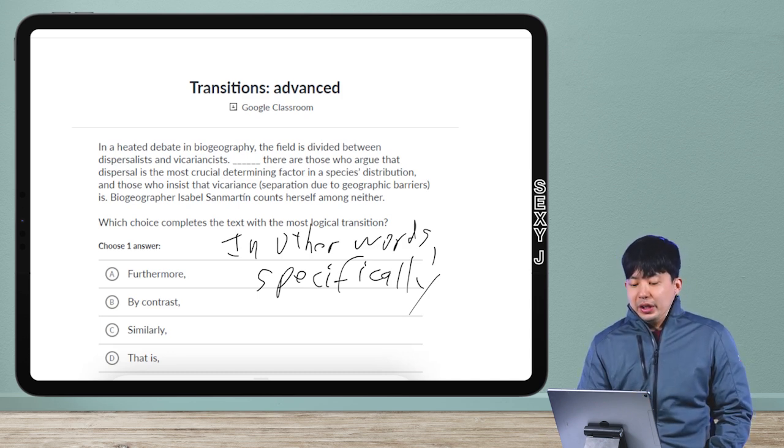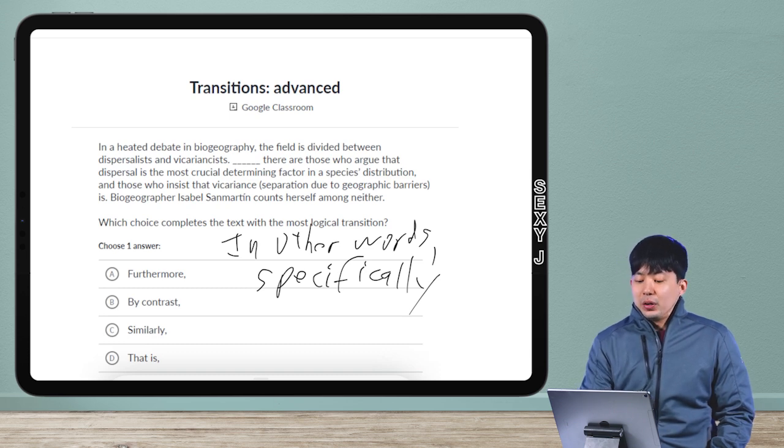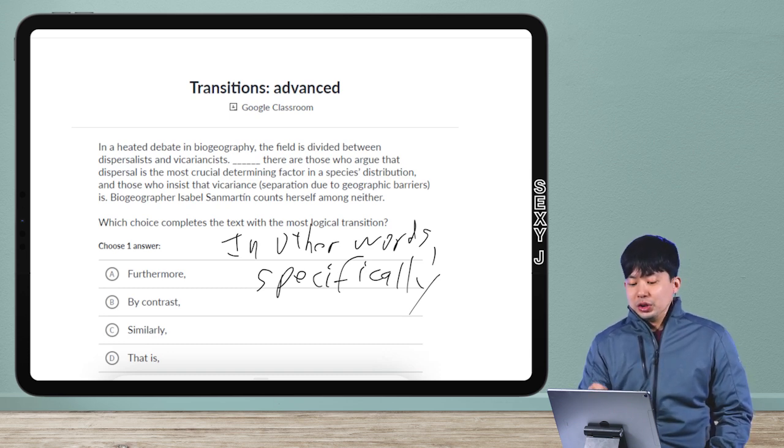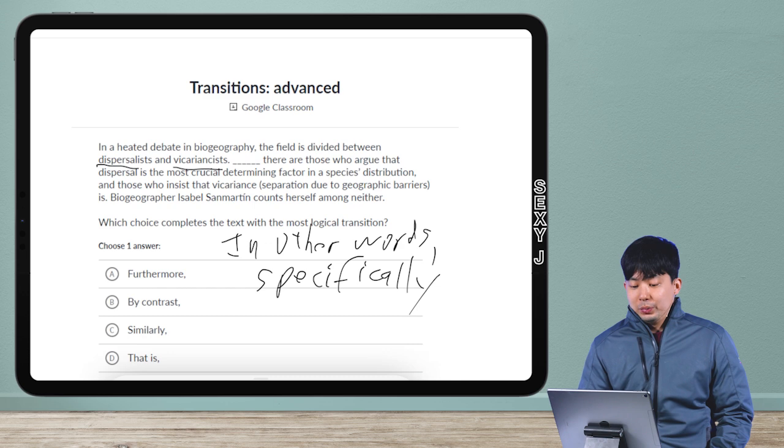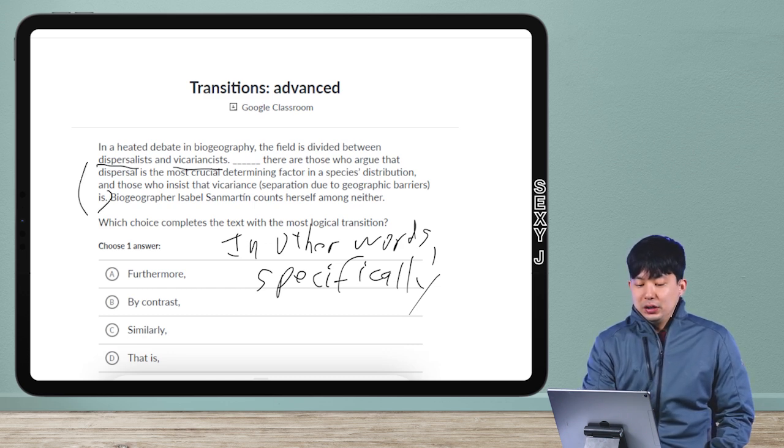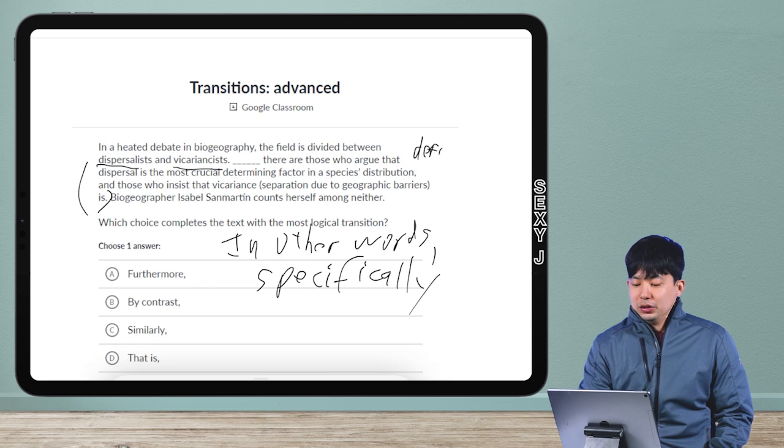In a heated debate in biogeography, the field is divided between dispersalists and vicarianists. I have no idea what that means. There are those who argue that dispersal is the most crucial determining fact. Okay, so I don't know who these people are—I'm not a biogeographer. So this thing right here is actually providing the definitions, it's explaining.